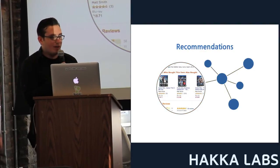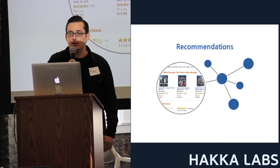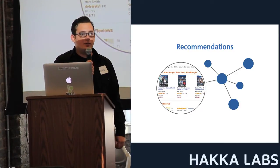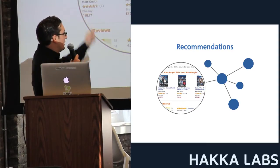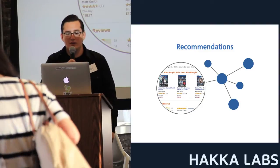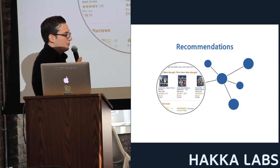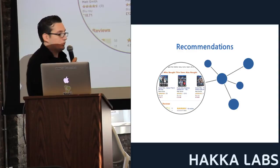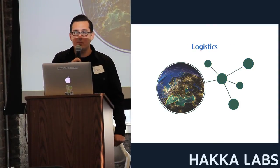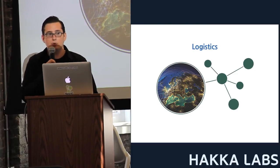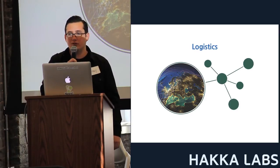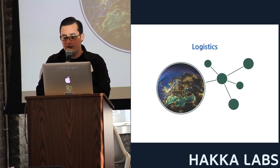Recommendations: a user who viewed X also viewed Y — it's a classic example. If you've used Amazon.com, you'll see a widget at the bottom of a page showing other things you may be interested in — for example, Doctor Who. Logistics and parcel routing: you want to deliver a parcel to a destination, and it has to go through a few routing centers. Neo4j is great for that as well.